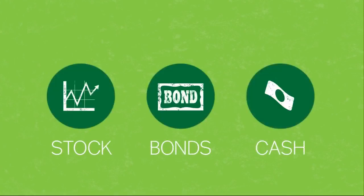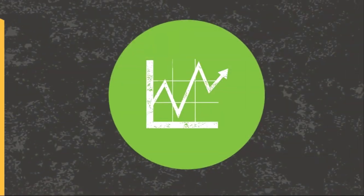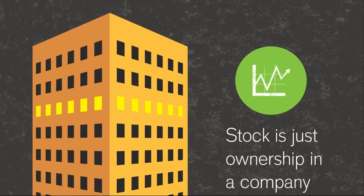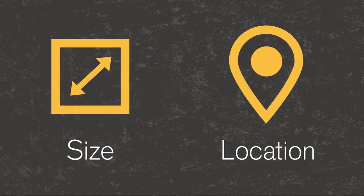Stock, bonds, and cash. Stock is just ownership in a company. There are many ways to classify stock. Two major ones are size, called market capitalization or cap, and company location. Each classification has its own typical level of risk.